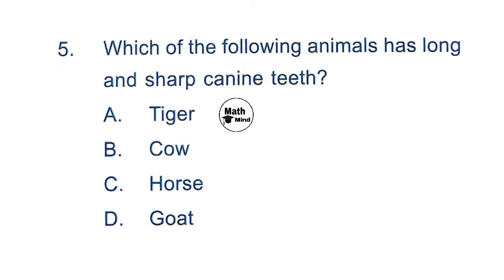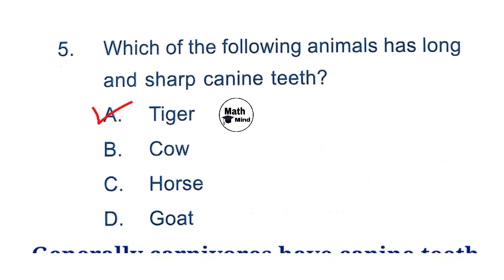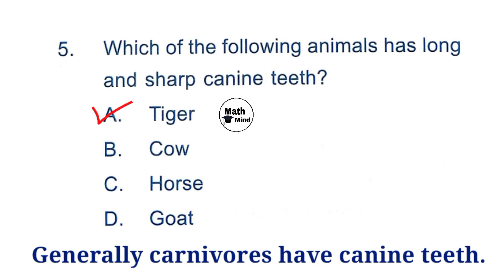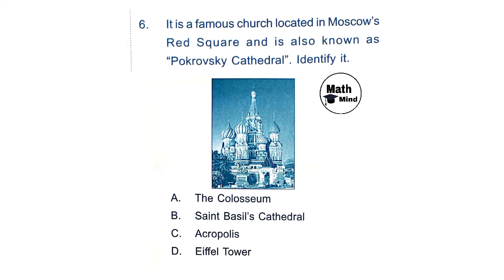Question 4: The flowers which are pollinated by hummingbirds are generally option D — correct: tube-shaped. Question 5: Which of the following animals has long and sharp canine teeth? Option A is correct: tiger. These pointed teeth between the incisor and premolar are generally found in carnivores.